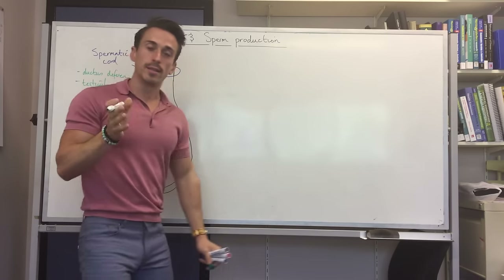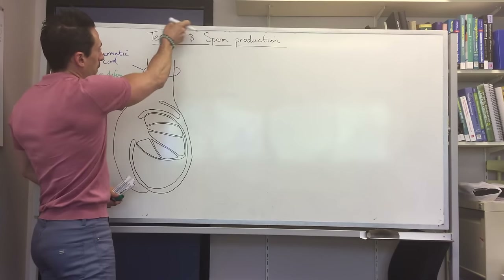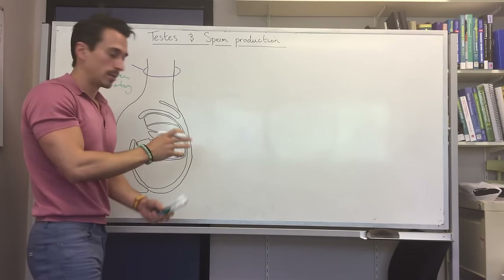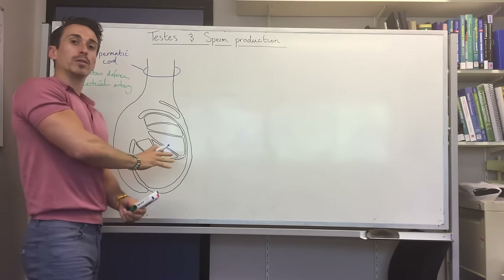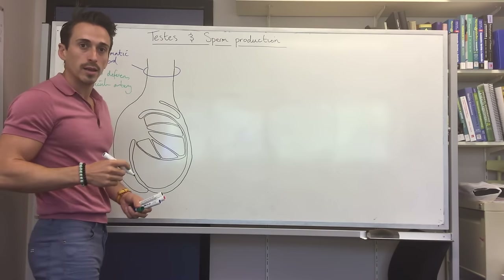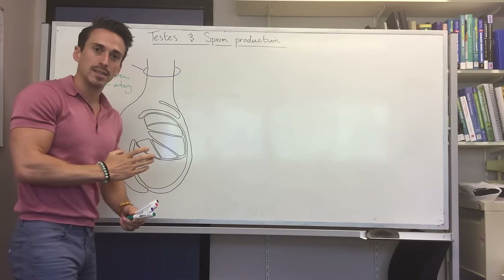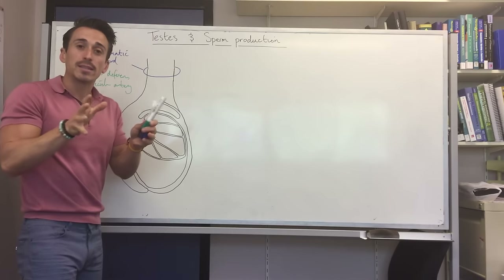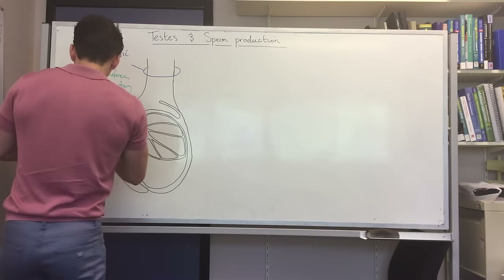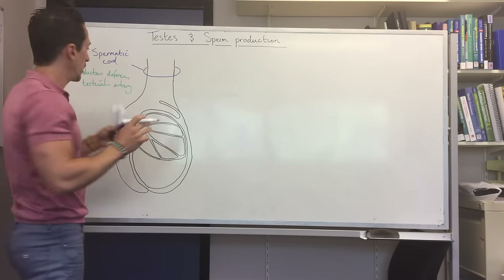Also within the spermatic cord is the testicular artery, which is a branch of the abdominal aorta that comes down to provide nutrients to the testes. Since there's an artery, there's also a venous system — the veins that come back out of the testes form a plexus, like a braiding.